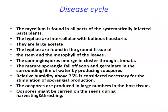The mycelium is found in all parts of the systemically infected plant. The hyphae are intercellular with bulbous haustoria and are aseptate. The hyphae are found in the ground tissue of the stem and the mesophyll of the leaves. The sporangia emerge in clusters through stomata.